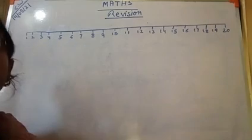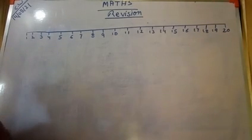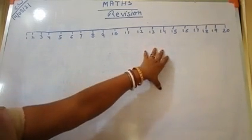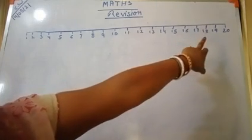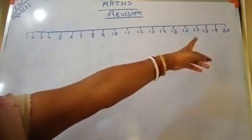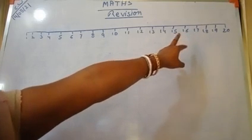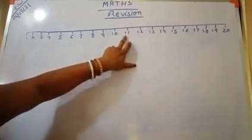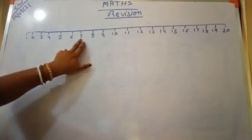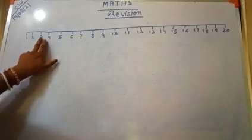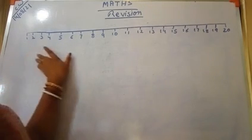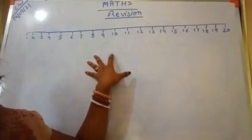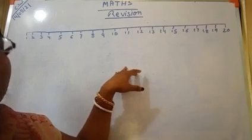Now, we will be counting the numbers from the back side. That is called backward counting. When we are counting the numbers from 20, 19, 18 from the back side — 20, 19, 18, 17, 16, 15, 14, 13, 12, 11, 10, 9, 8, 7, 6, 5, 4, 3, 2, 1 — it is called backward counting.